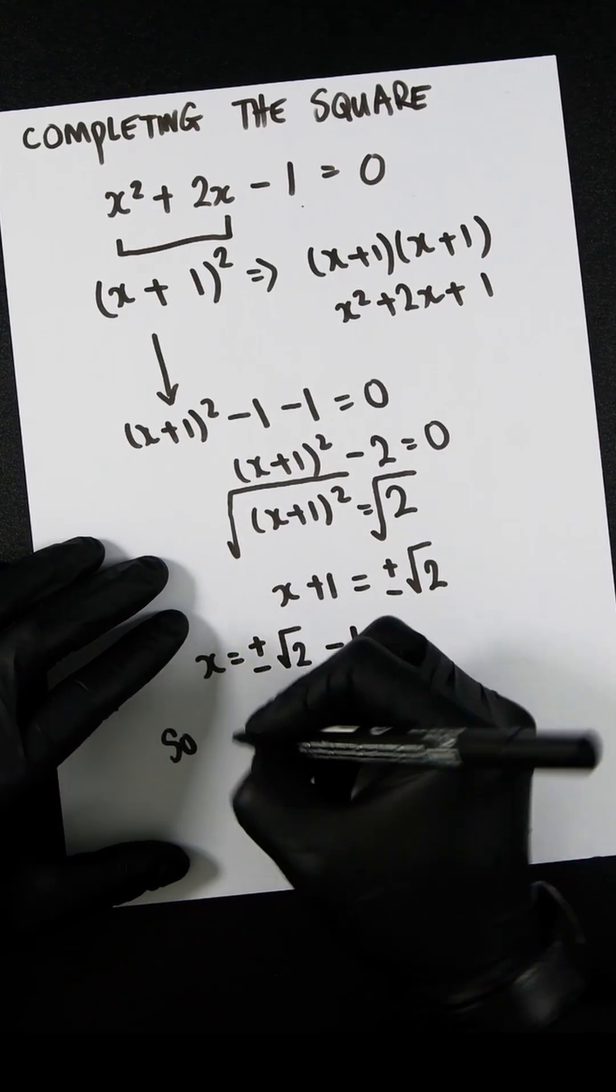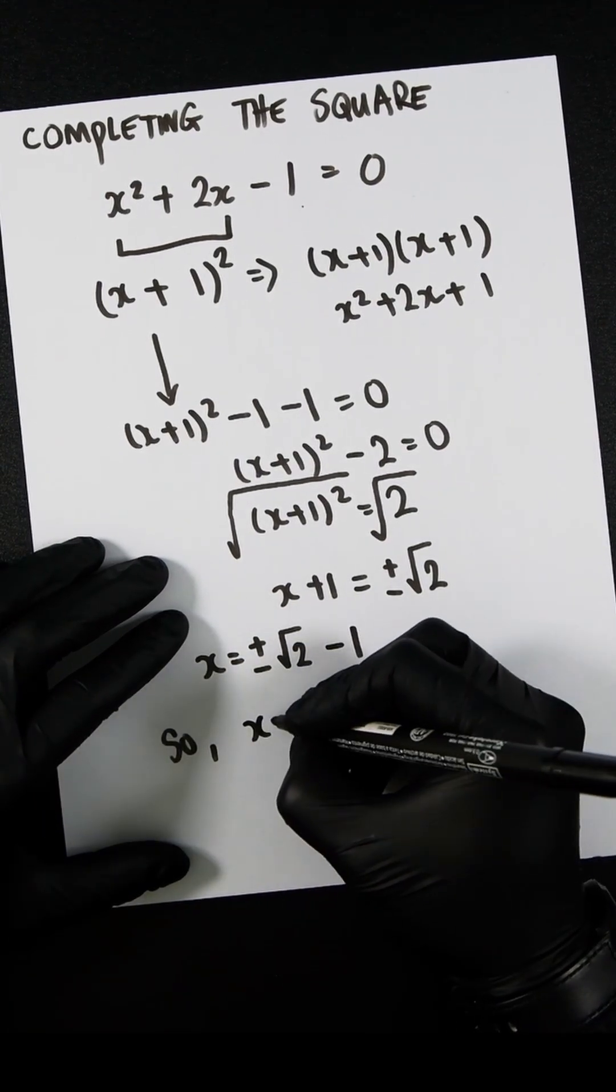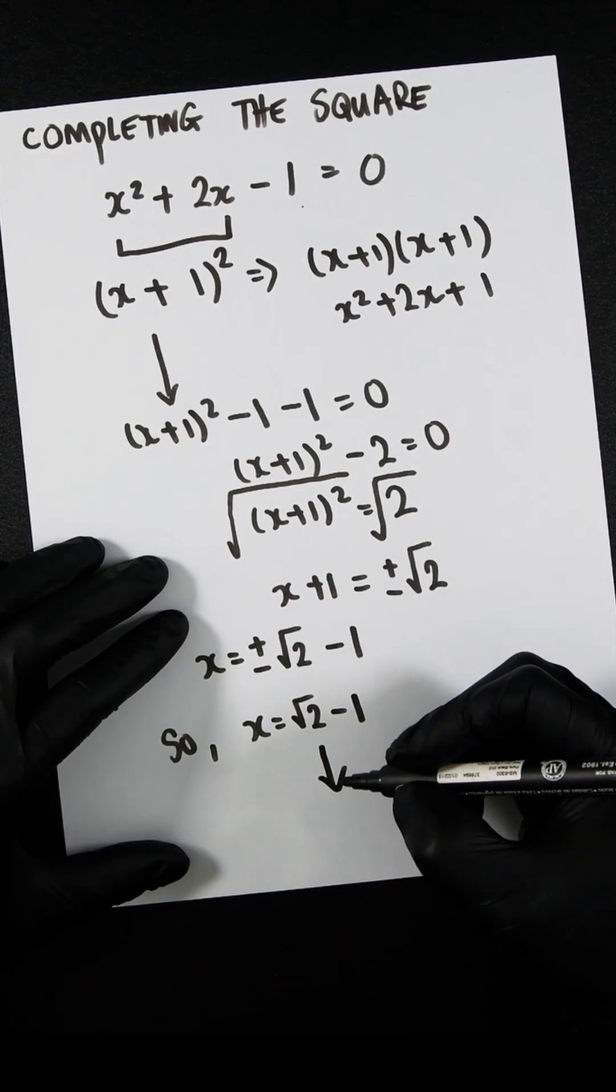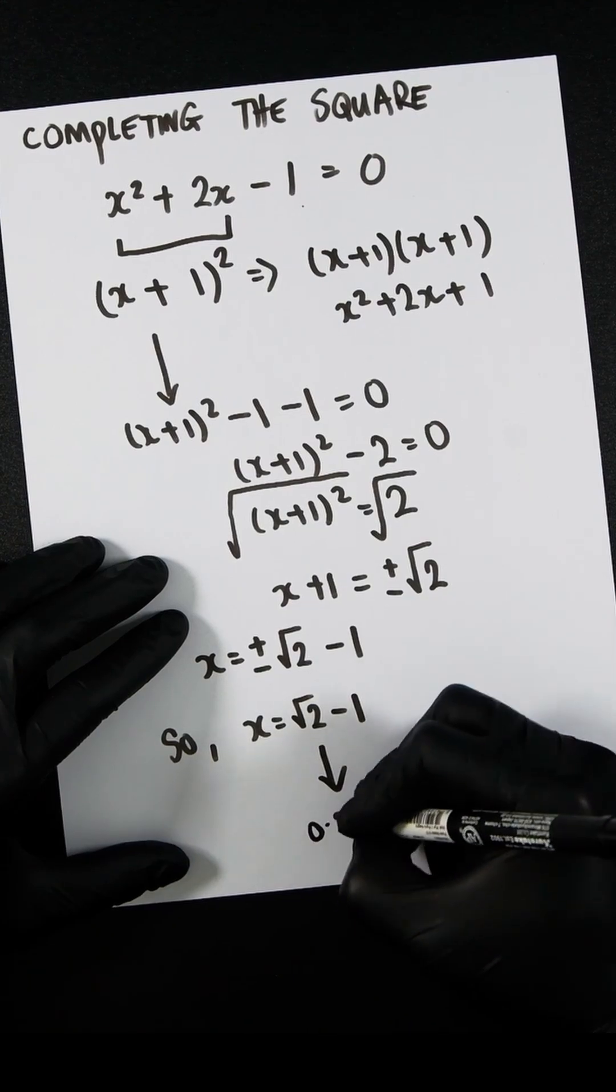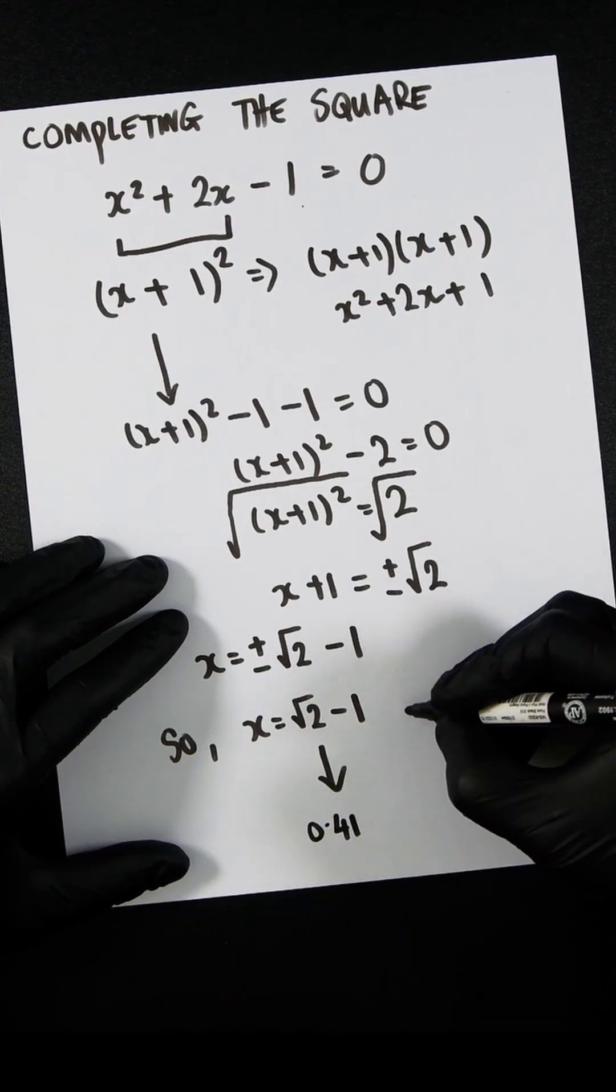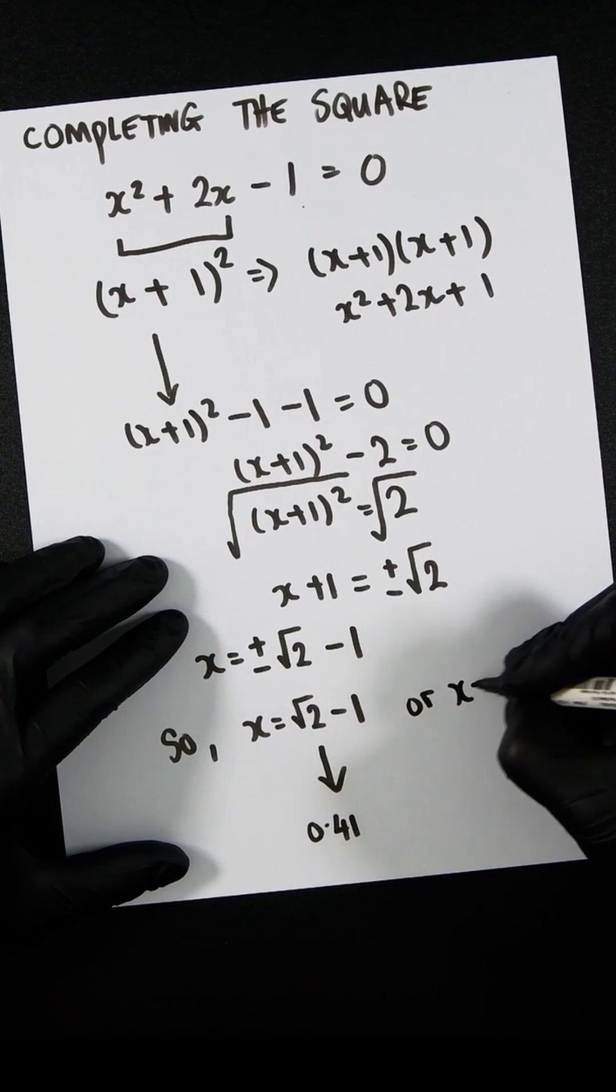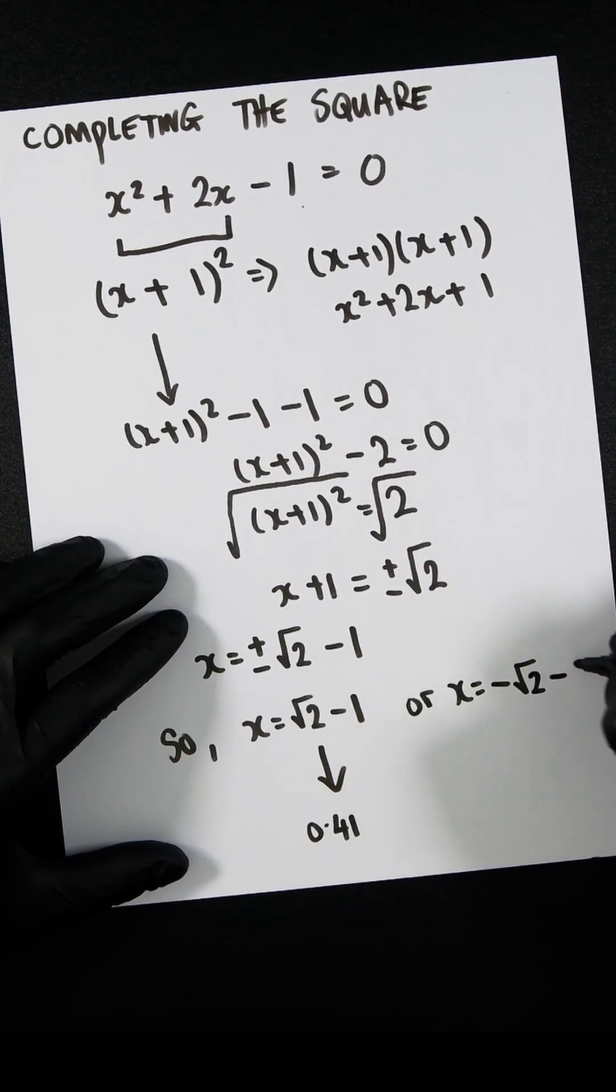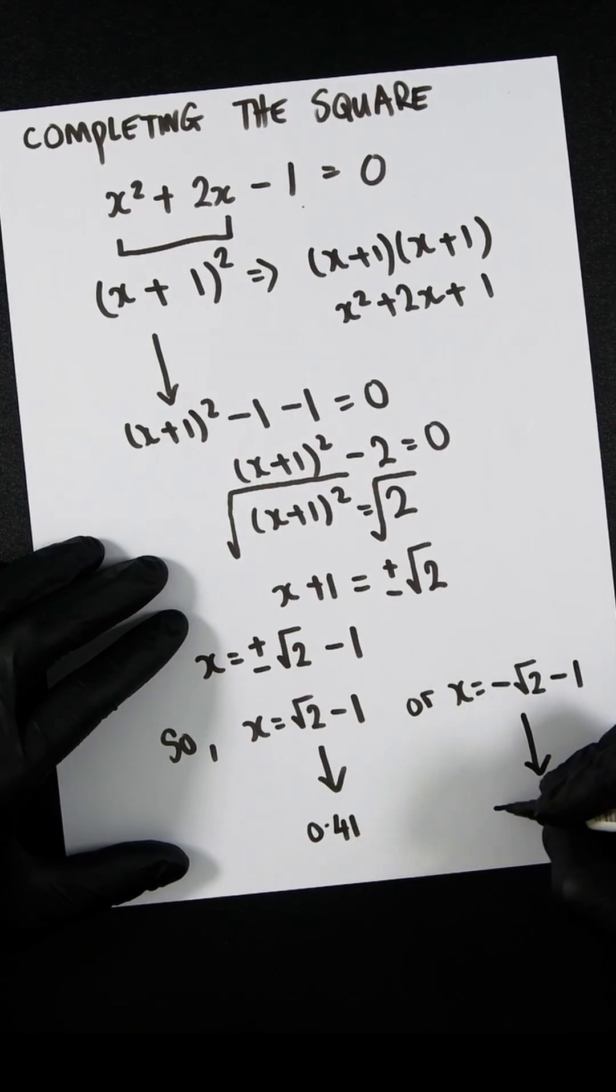So when x equals √2 - 1, this would be the same as 0.41. Or when x equals -√2 - 1, this is the same as -2.41.